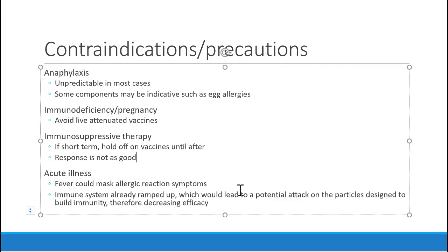Acute illness is another consideration that comes up a lot. We want to wait until patients get over their acute colds before giving vaccines. One reason is that a fever can mask some allergic reaction symptoms. Another is that if the immune system is already ramped up, it could lead to decreased efficacy — your system may not interact with the vaccine antigen the way it's designed to. Vaccines are not really useful in acute medicine, so if somebody has to wait a week, it's not a big deal. Generally, it's fine to wait a little bit.